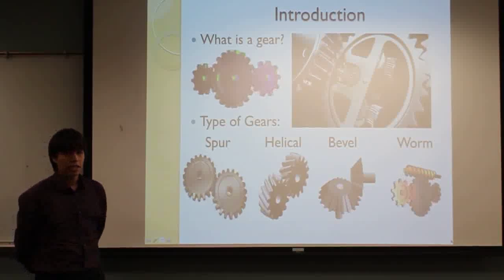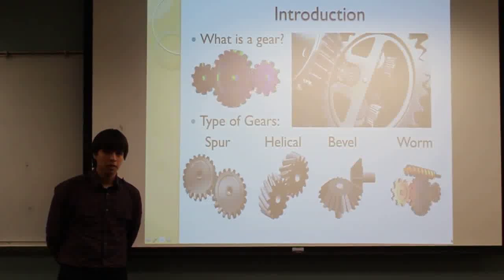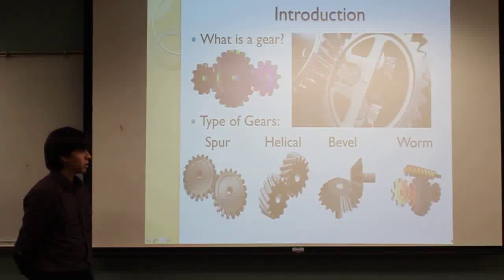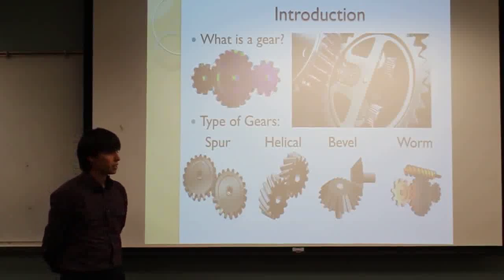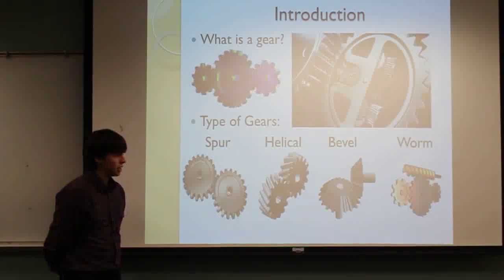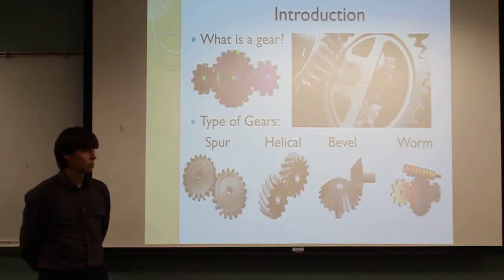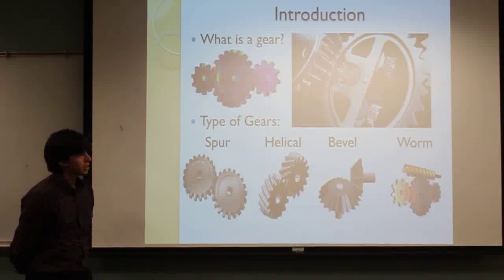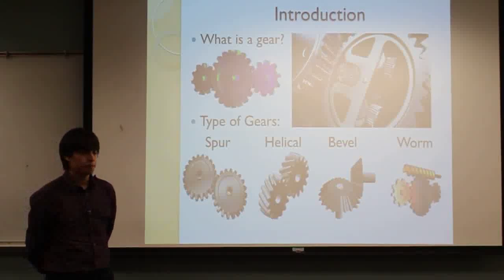In today's society, there are some different types of gears, but the most common ones are the ones shown: the spur, helical, bevel, and worm gears. As you can see, they all have different motions, mostly because their shaft alignment is all different for each one.